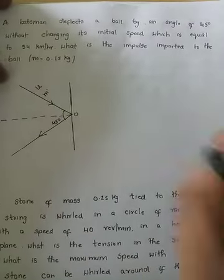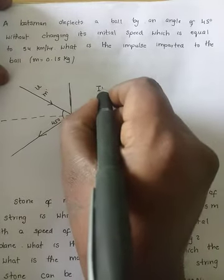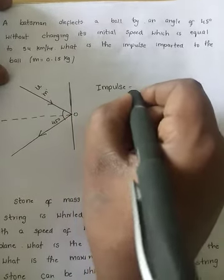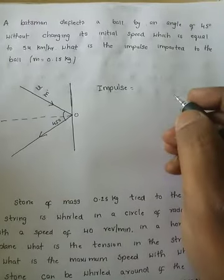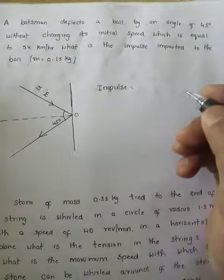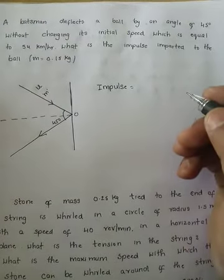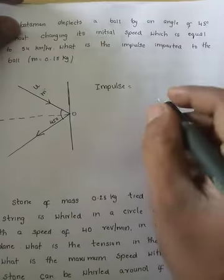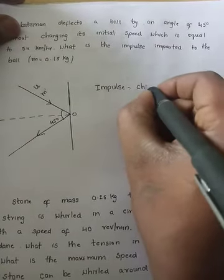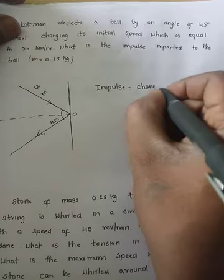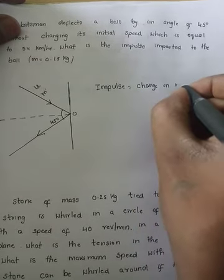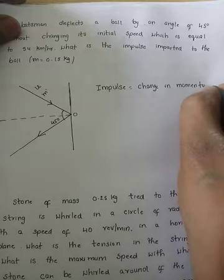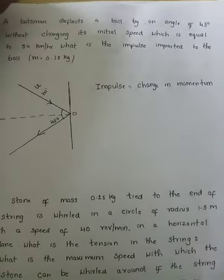As we know, impulse is equal to change in momentum. So impulse is equal to change in momentum, that is initial momentum minus final momentum.